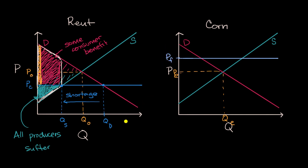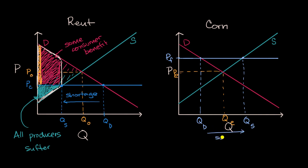What's going to happen now? Let's think about the quantity demanded and the quantity supplied. That right over there is the quantity demanded — where the price intersects the demand curve — and this right over here is the quantity supplied, where we intersect the supply curve. In this situation, the quantity demanded is less than the quantity supplied. So in this case you have a surplus. The farmers would want to produce more than people would want at that price.